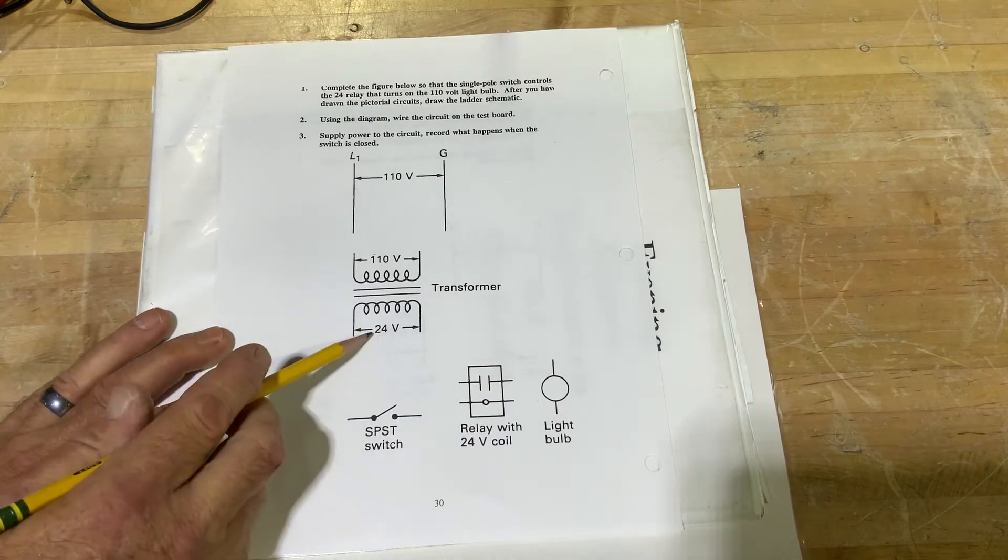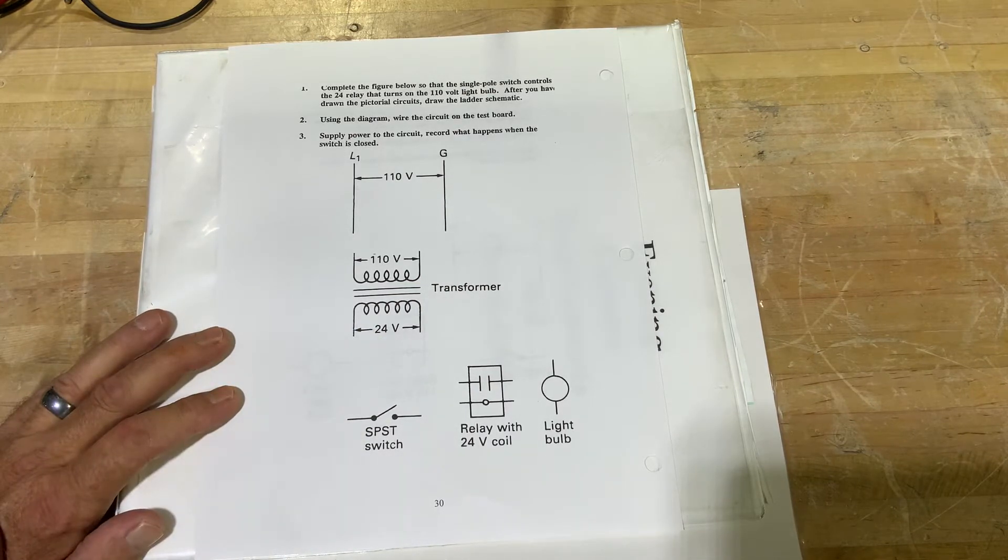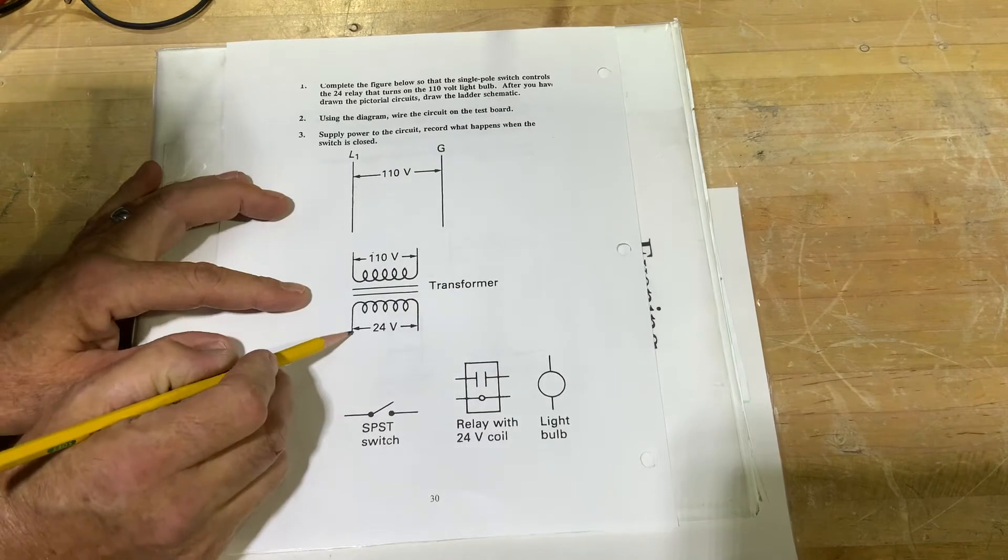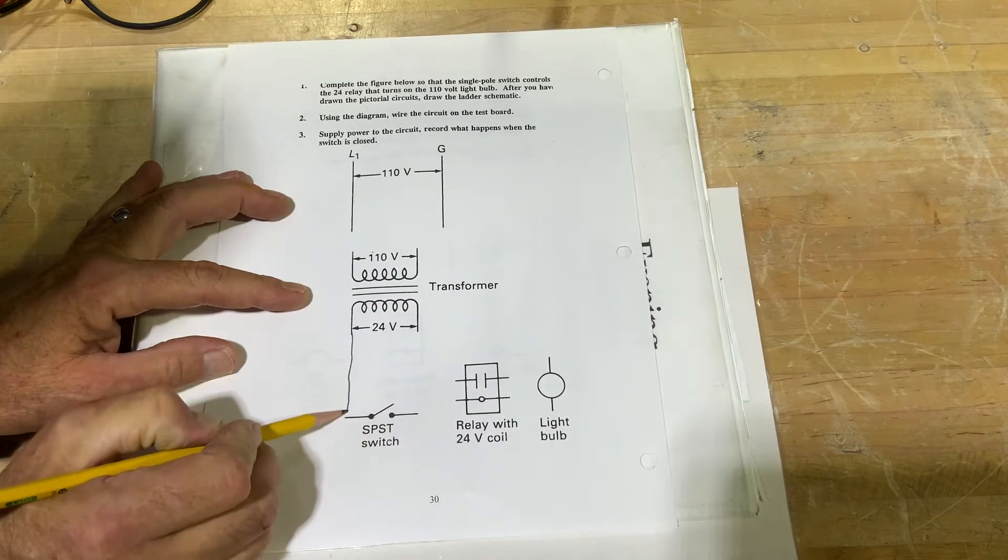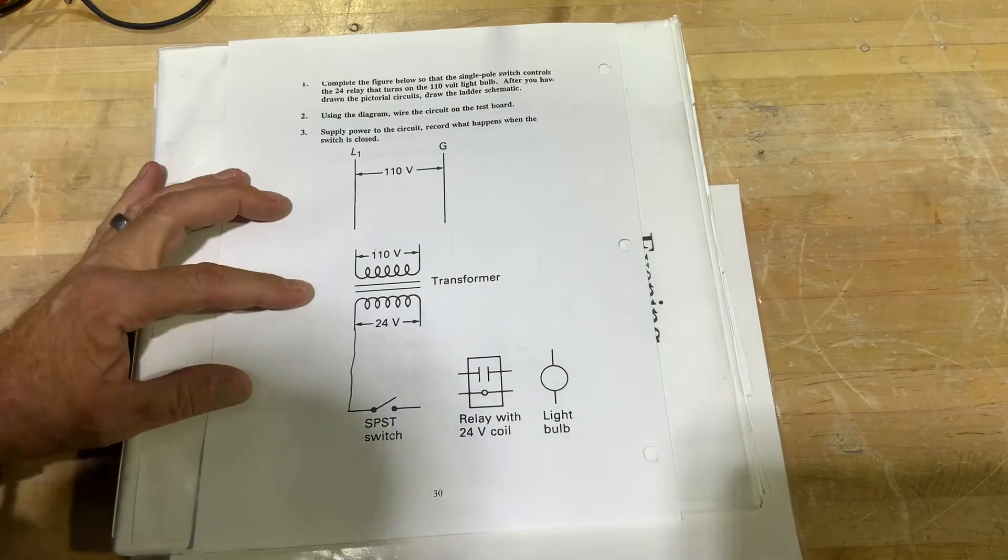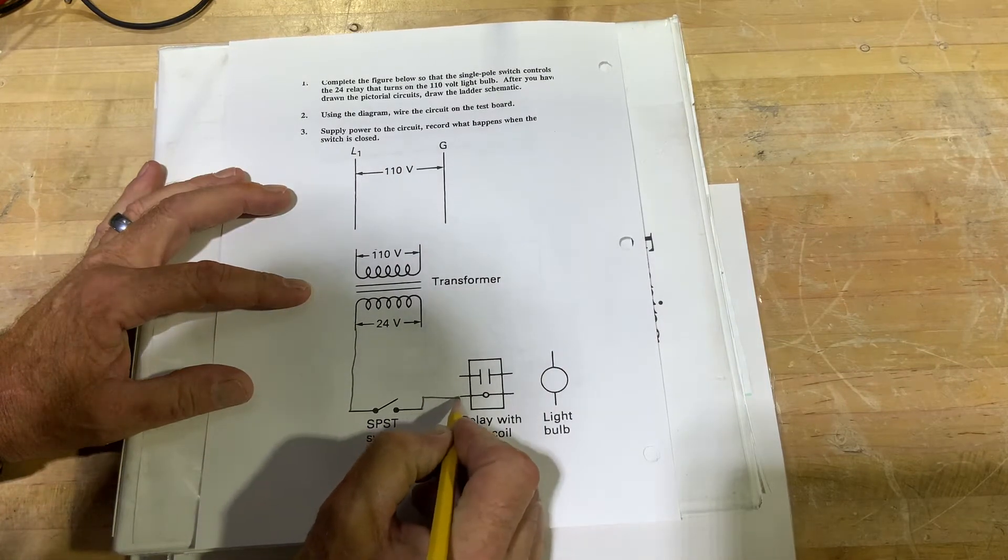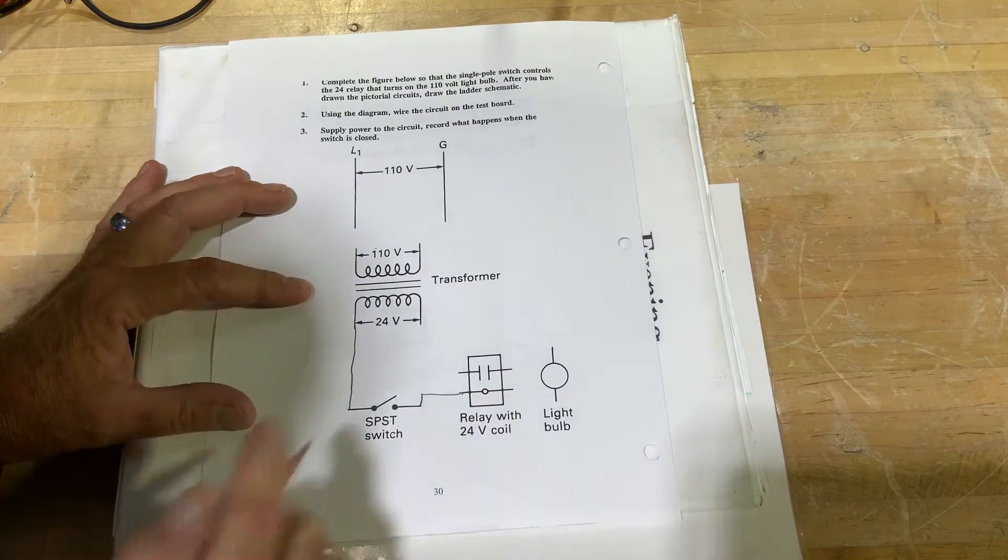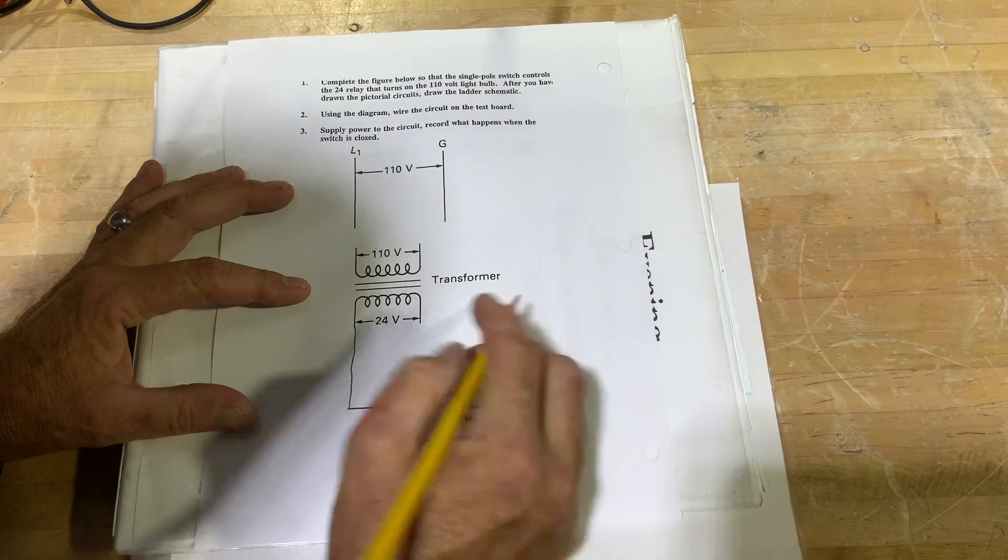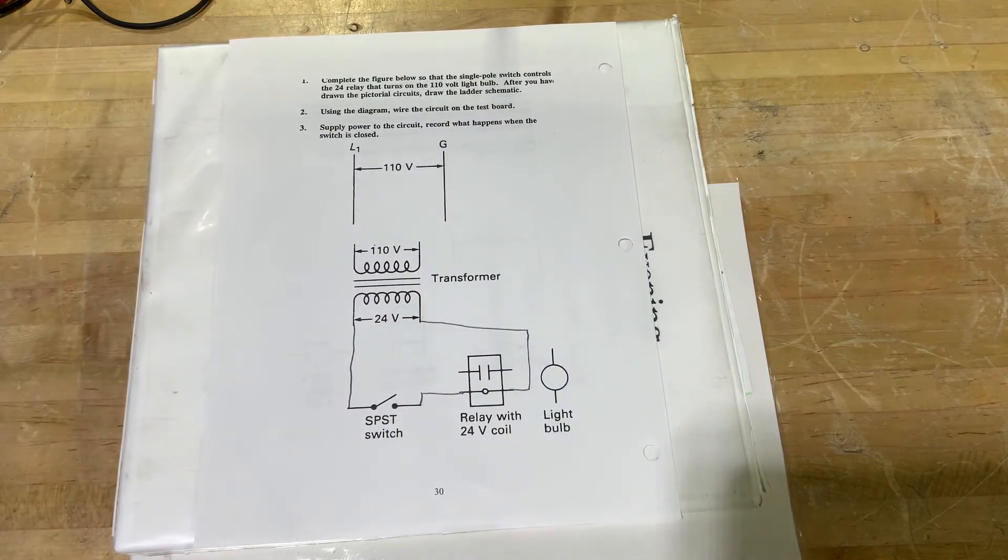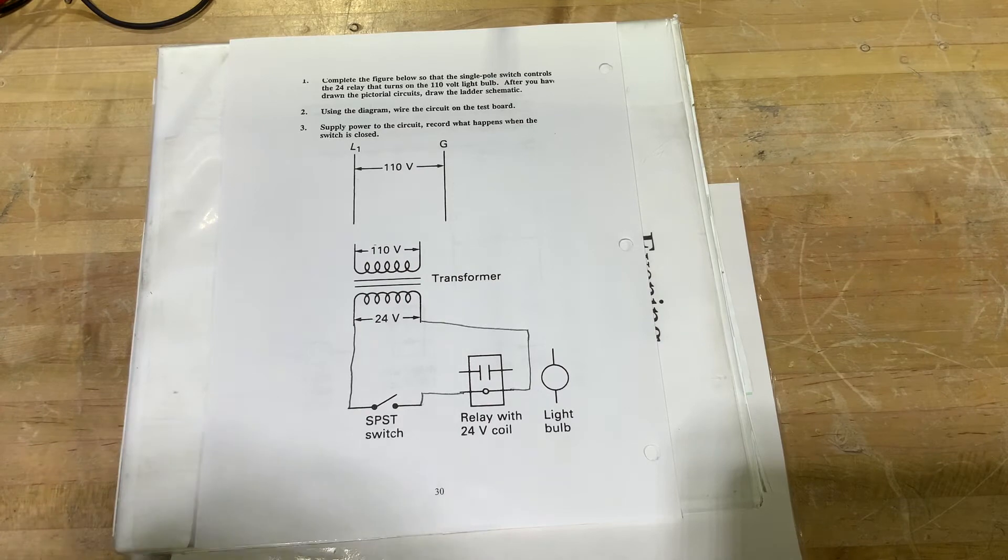We have that single pole single throw switch. We're going to put that on the transformer 24 volt side to control our coil. So we could just take that 24 volt power, go into one side of our switch, out of our switch into our coil, out of our coil back to our 24 volts. So we have that 24 volt circuit wired in.